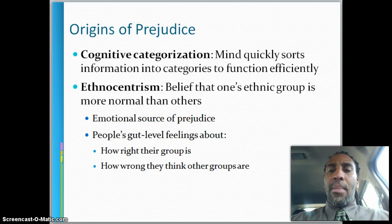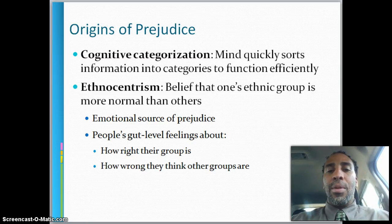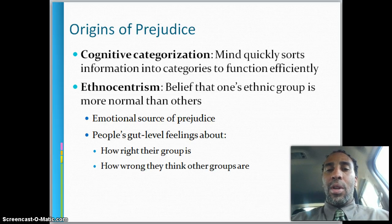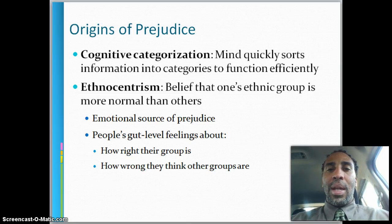Cognitive categorization: the mind quickly sorts information into categories to function efficiently — it works kind of like a computer; our brain is a supercomputer. Ethnocentrism is a belief that one's ethnic group is more normal than others. The emotional source of prejudice is people's gut-level feeling about how right their group is and how wrong the other groups are. For example, in boxing you can still root for your countrymen and wave your flag, which is why people who don't really know boxing can still get excited — they're rooting for someone from their country.